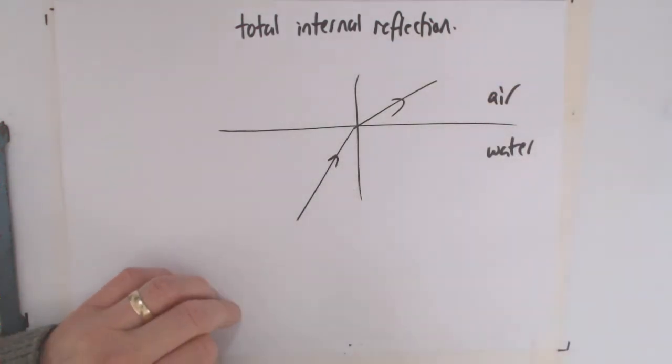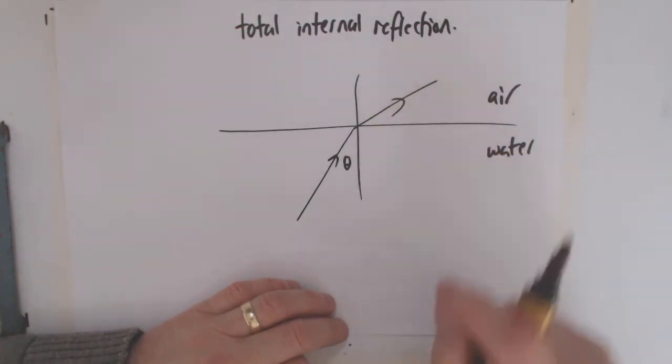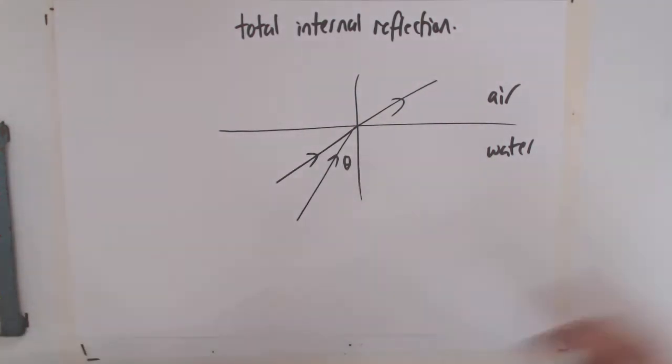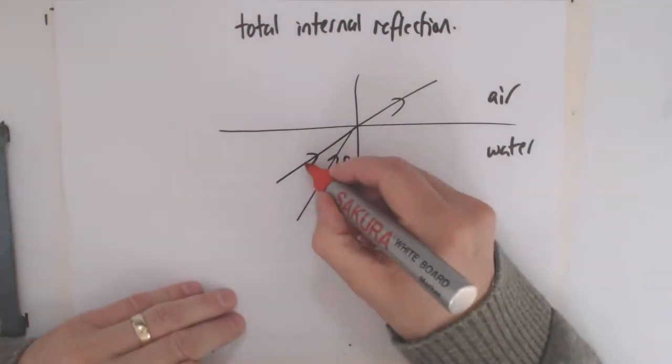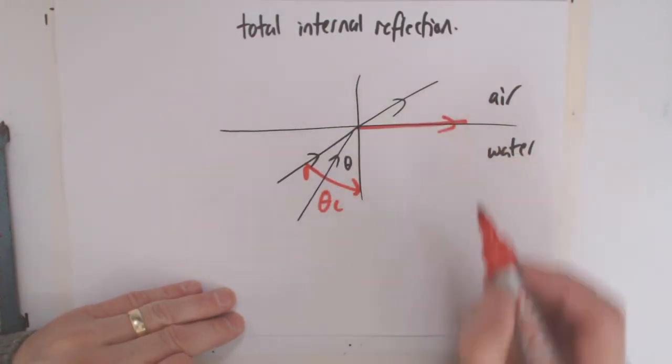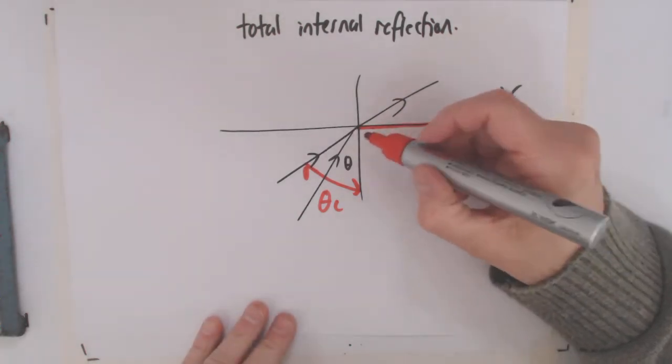Now the thing is, if we call that theta, obviously theta is going to get bigger. There's going to come a time when you get an angle where it's going to try. This is the angle where it's going to try and reflect 90 degrees, and at that point instead of reflecting at 90 degrees, it totally internally reflects.